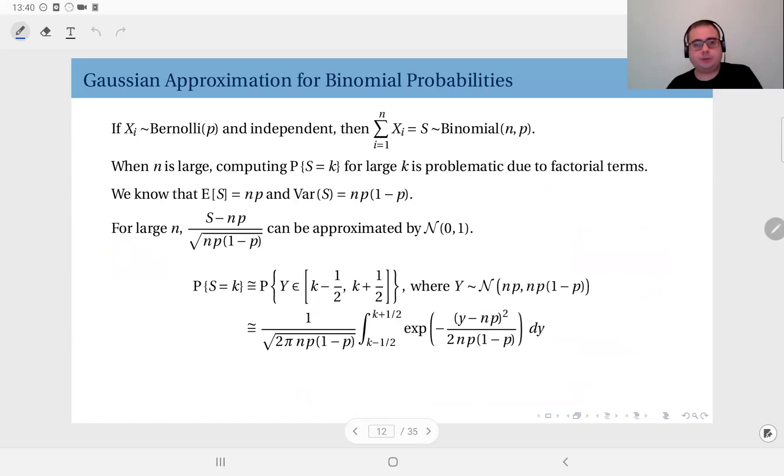Another example is the Gaussian approximation for binomial probabilities. So we also have seen Gaussian approximation for Poisson probabilities. Again here now we have the Gaussian approximation for binomial probabilities and this is also similar to what we have done here.